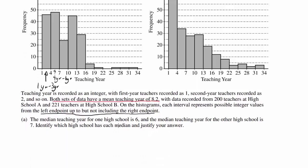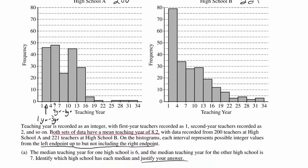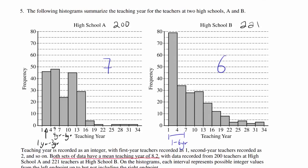The median teaching year for one high school is 6, and the median teaching year for the other high school is 7. Identify which high school has each median and justify your answer. Just by looking at the graph, it looks like there are more people concentrated in the 1 through 6 year range for high school B compared to high school A. So it seems like the median of 6 should go to high school B and median of 7 should go to high school A. But then again, there is a difference in sample size.